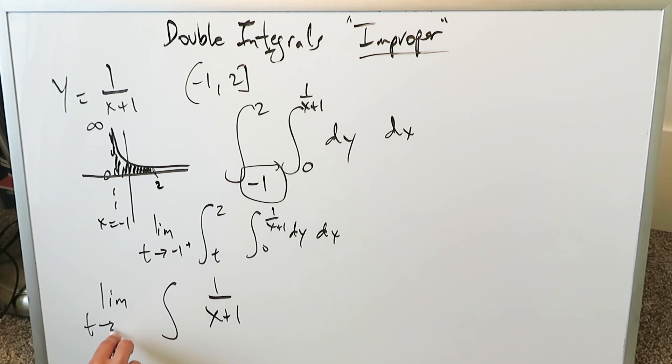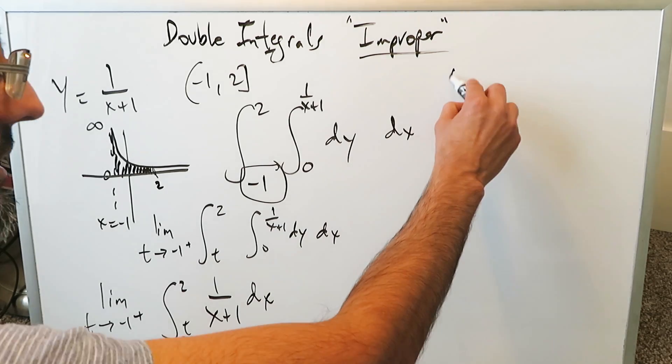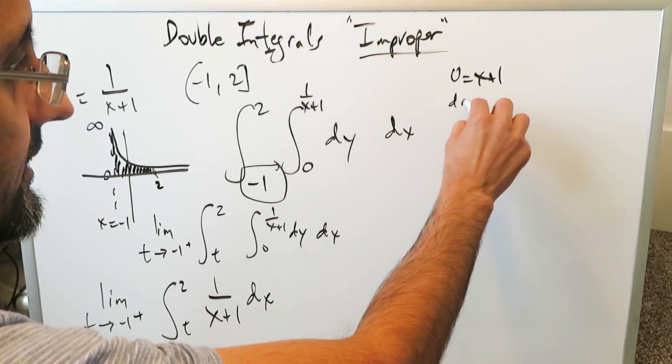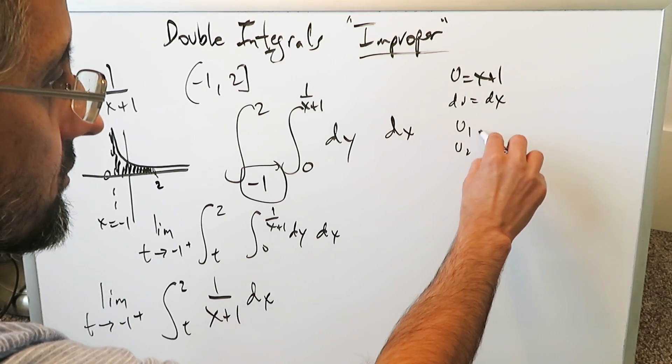And you see it right here. Limit as t approaches minus 1 from the right, t to 2, 1 over x plus 1 dx. You can do u substitution. u is equal to x plus 1. du is equal to dx, u1 and u2.